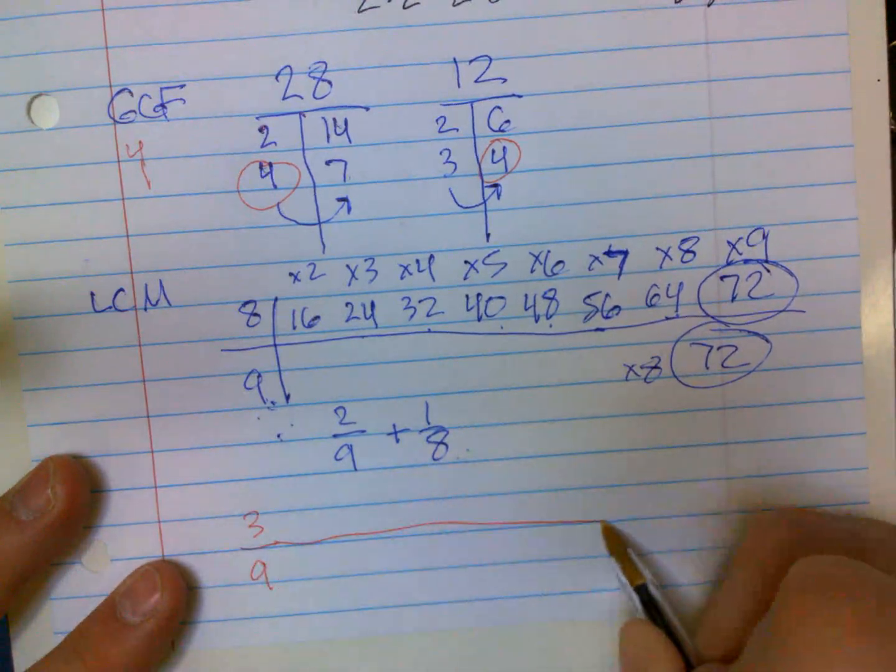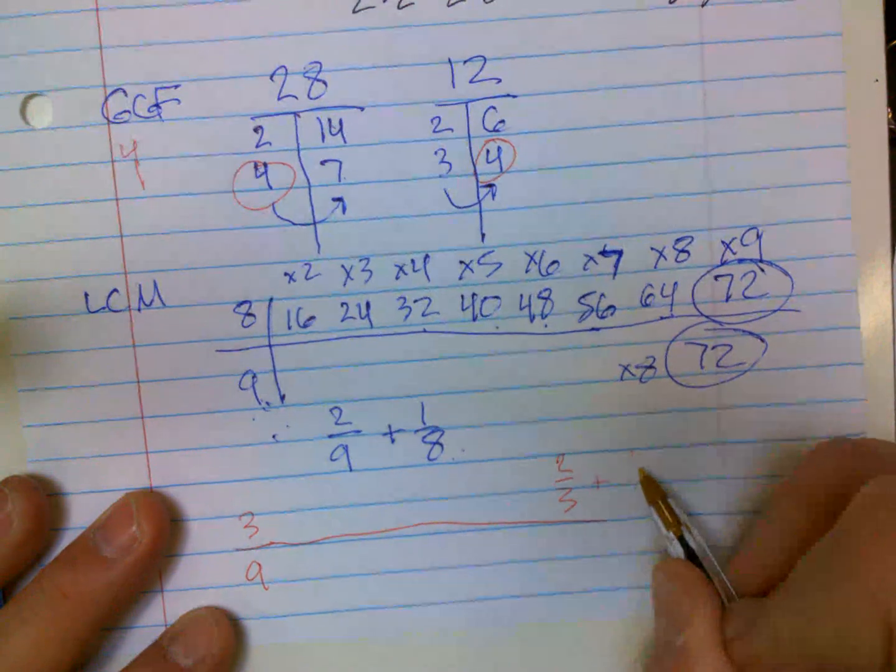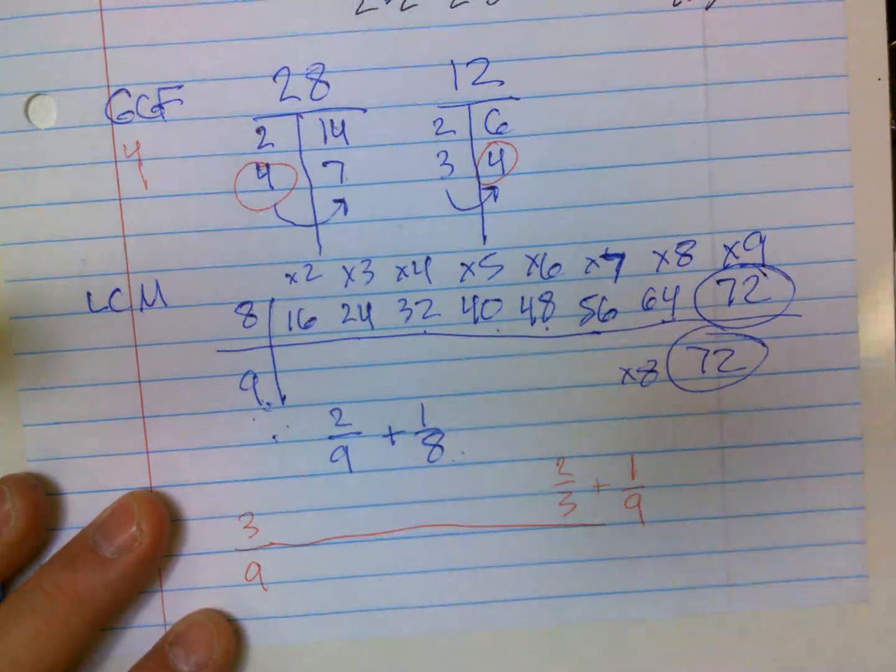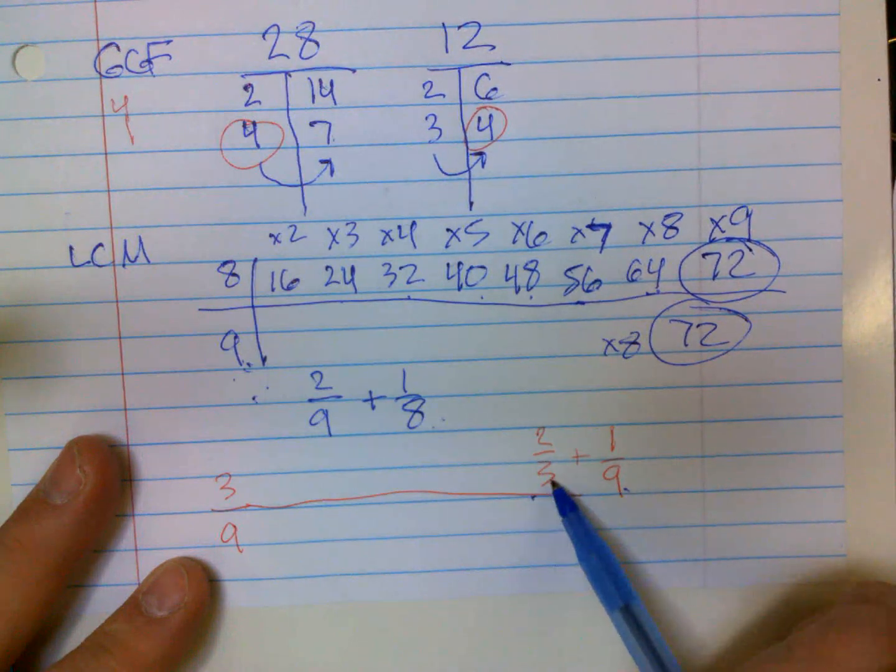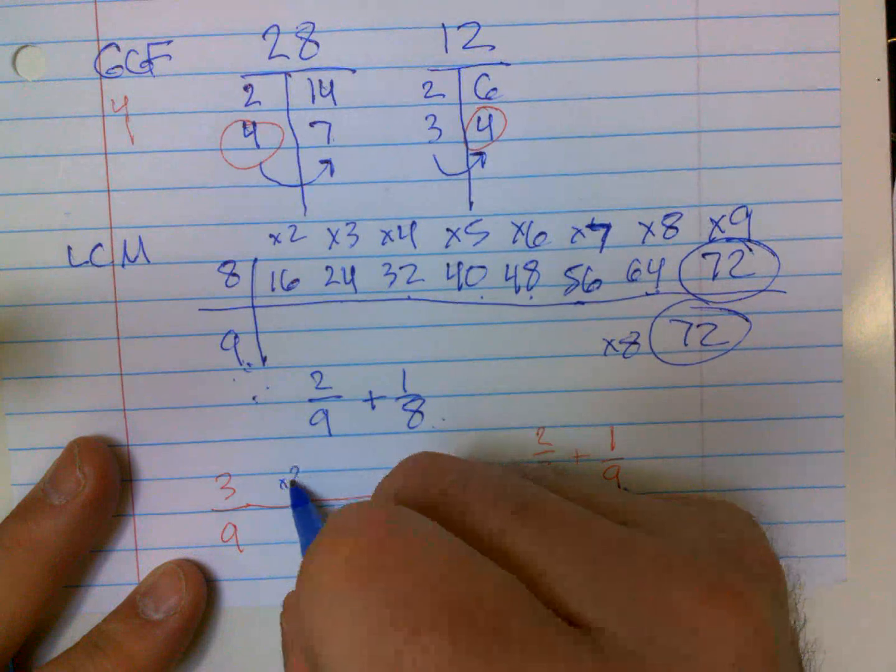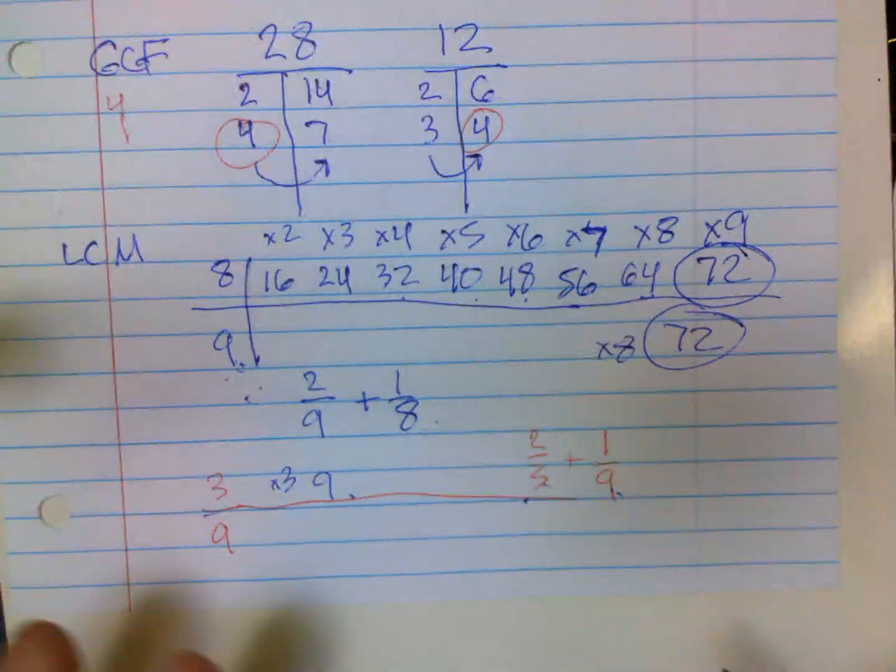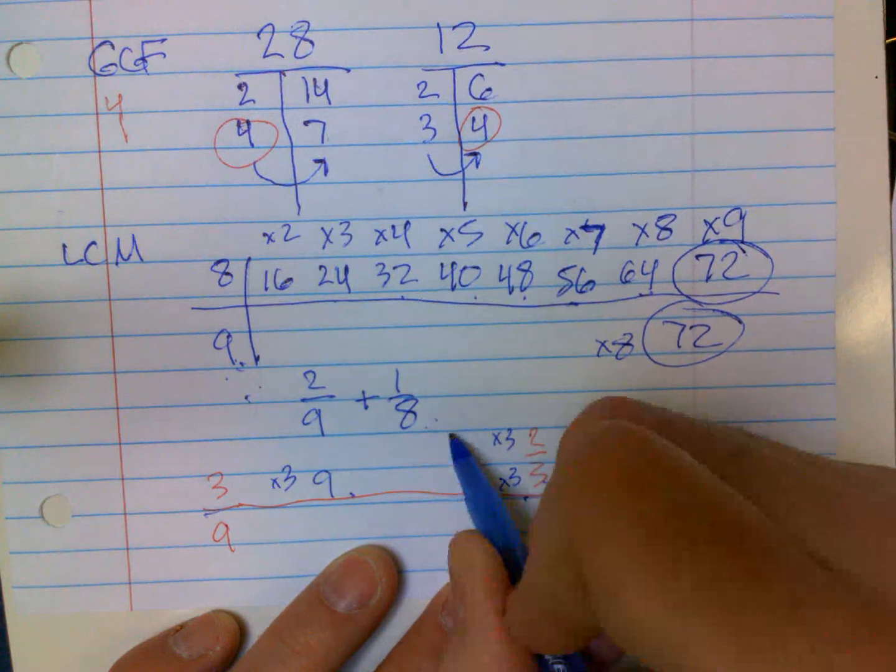So let's say I have two thirds plus one ninth. Well I don't have to change the nine, I can just change the three. How many times does three go into nine? Times three would make it nine. So I'm going to times the bottom and the top of the fraction by three and I will get six